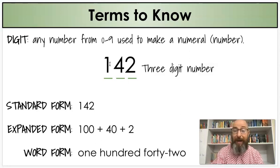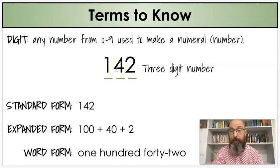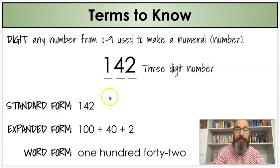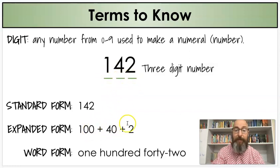Those digits, of course, are numbers, but they all go together to make one big number, 142. There's three different ways we can write this number. We have the standard form, which is just writing a number. There's the expanded form, and that's when you take each part of the place value, the hundreds, tens, and ones, and you break them apart and add them, like an addition question, 100 plus 40 plus 2.